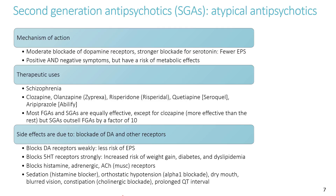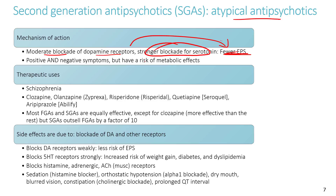Second-generation antipsychotics, also called atypical antipsychotics, provide only moderate blockade of dopamine receptors, which results in fewer extrapyramidal symptoms. They also block serotonin receptors much more strongly, and blocking serotonin receptors leads to metabolic effects.